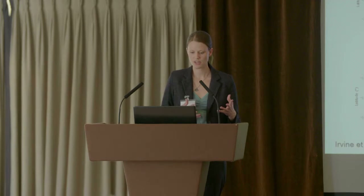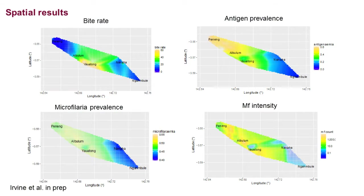For the spatial results, these are the fits from our hierarchical model across the five villages. For the bite rate, there is a clear hot spot in Yawatong with very high nightly biting rates that cools off moving both east and west. For antigen prevalence there are also hot spots reaching into the northwest near Penang, and similar patterns exist for microfilaria prevalence and microfilaria intensity with some very specific hot spots of microfilaria intensity. There was significant dependence of all of these on the bite field, and the strength was greatest when predicting antigen prevalence, suggesting different factors drive disease prevalence versus infection intensity within an individual.